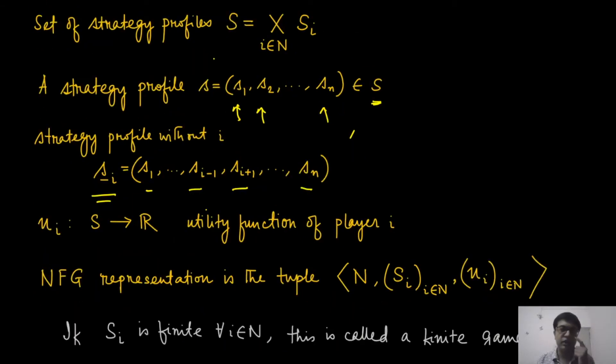The third important piece is the utility. Utility is a function taking the strategy profile - once all players have picked their strategies - and mapping it to a real number. Notice that this utility is different for different agents, so this is the utility function for player i. A normal form game representation is typically given by this tuple where the first entry is the set of players, the second entry is the set of all strategy sets for all the players, and the last are the utilities for all these players. This tuple will succinctly represent one normal form game.